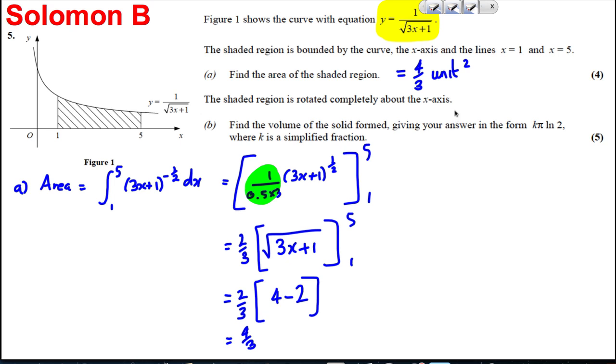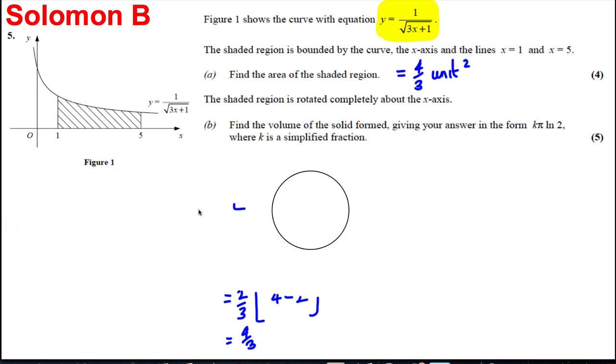The volume, what is the formula for the volume? Well, the formula for the volume is the integral between the x numbers of pi y squared dx. So we're going to work out the integral between 1 and 5, pi lots of it, y squared. If I square this, I actually get 1 over 3x plus 1 dx.